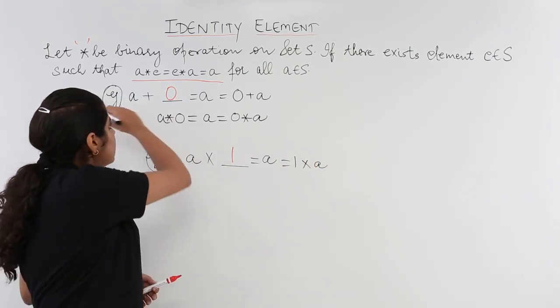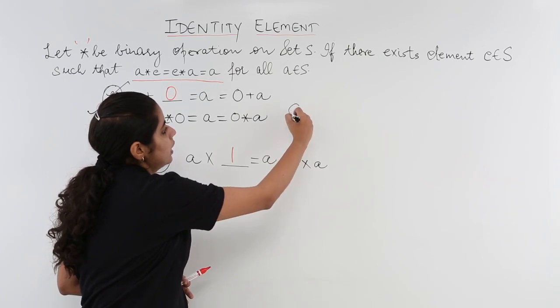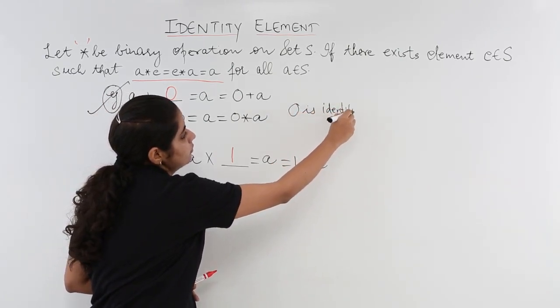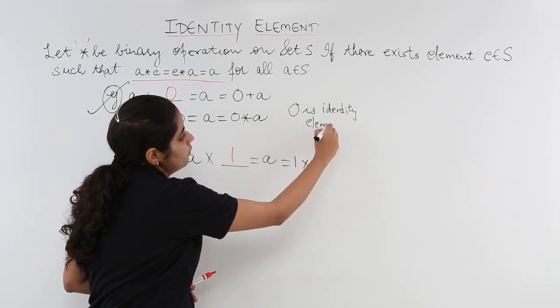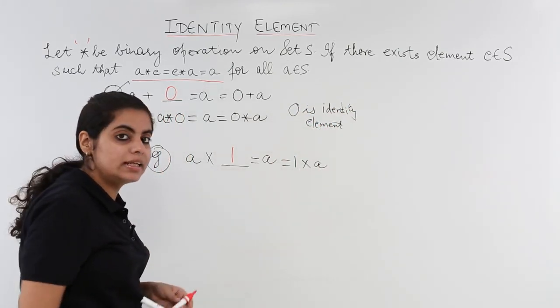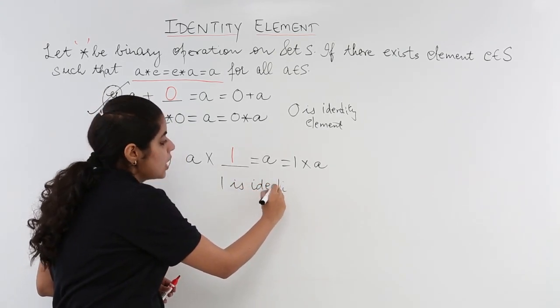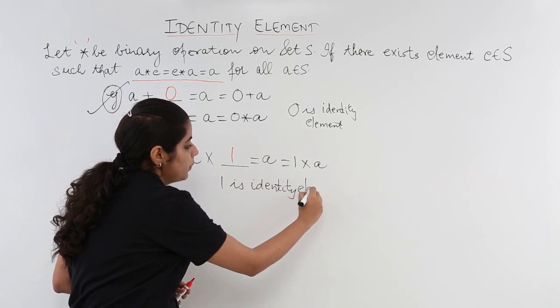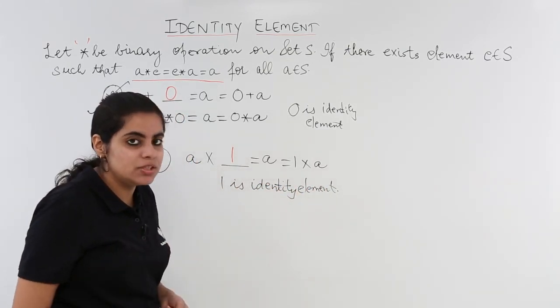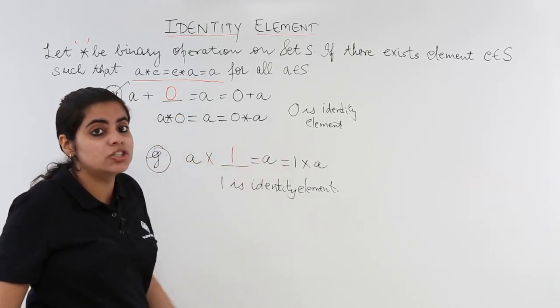So in the first example what is the identity element? Here 0 is identity element. Whereas in the second example what is the identity element? One is the identity element. Why? Because applying the operation of the given number or the element with 1 in this case and with 0 in this case does not change my answer.